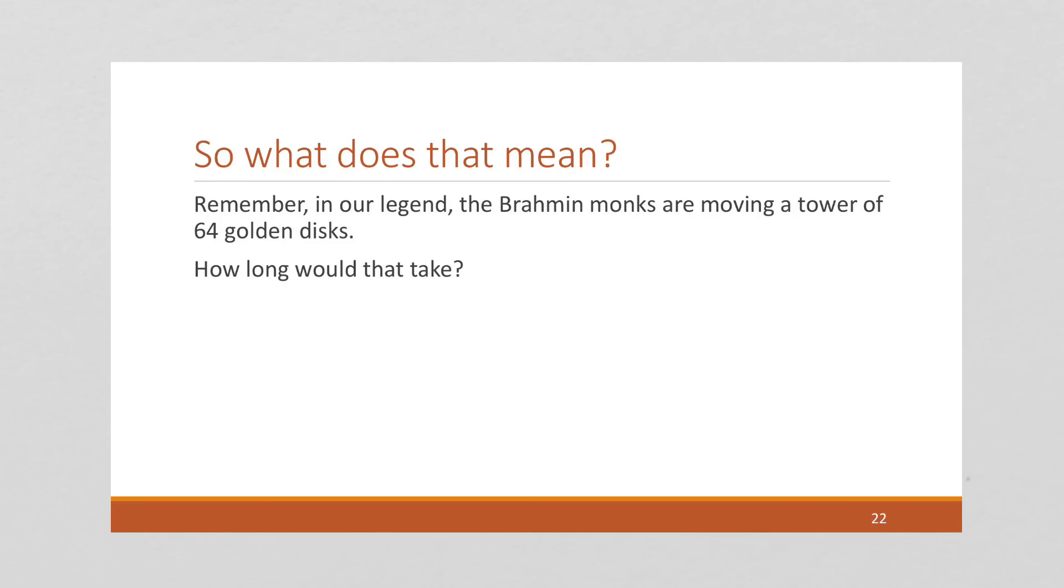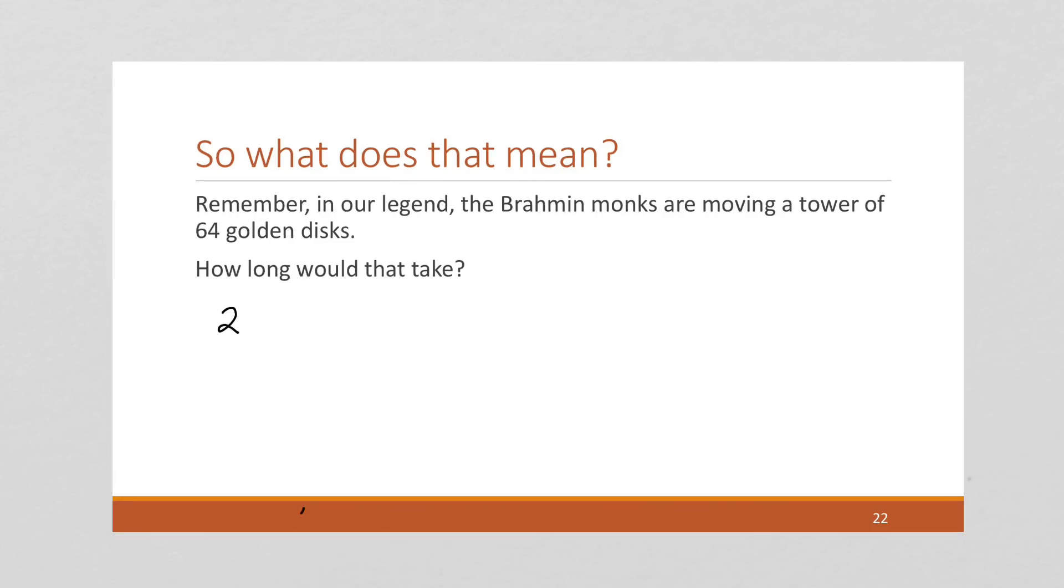Our goal is to figure out how long it's going to take to move the 64 golden disks in our legend. So to figure out how long that will take, let's figure out how many moves this is. So we know it's 2 to the 64 minus 1, and I'm going to let you work that out. And you probably want to use a calculator on your computer, not a calculator. A scientific calculator is going to give you this in scientific notation, which is going to round it. So if you don't do that, this is 18, 4, 4, 6, 7, 4, 4, 0, 7, 3, 7, 0, 9.